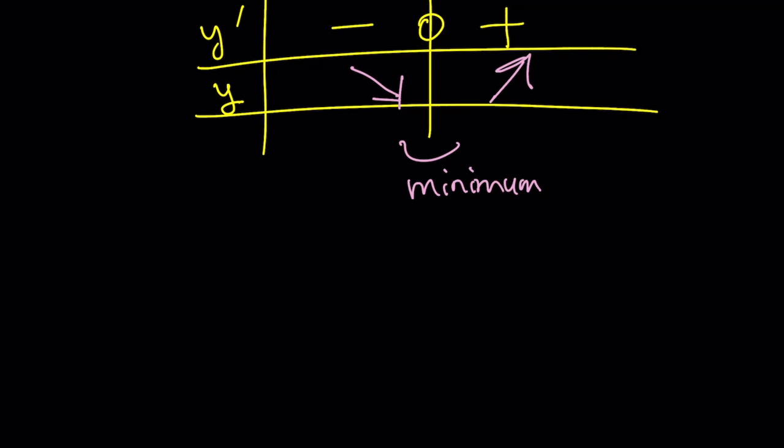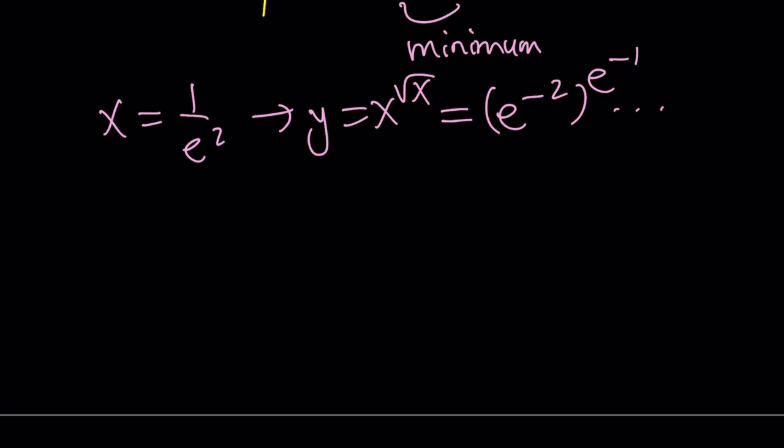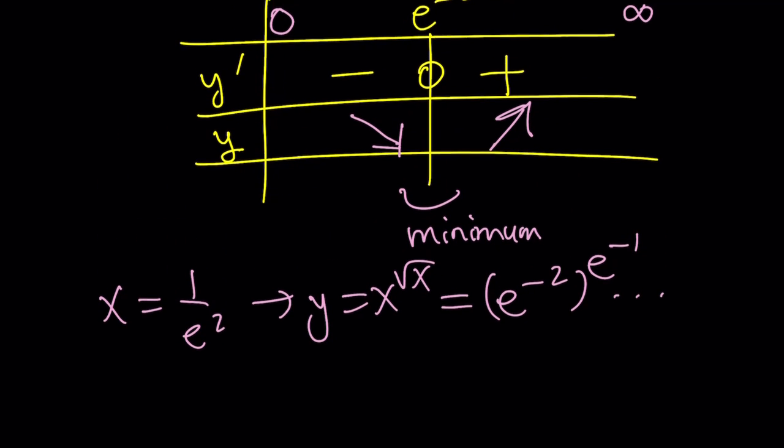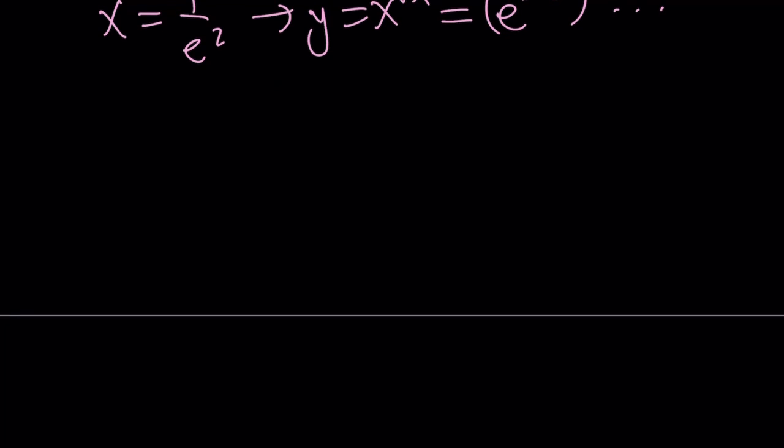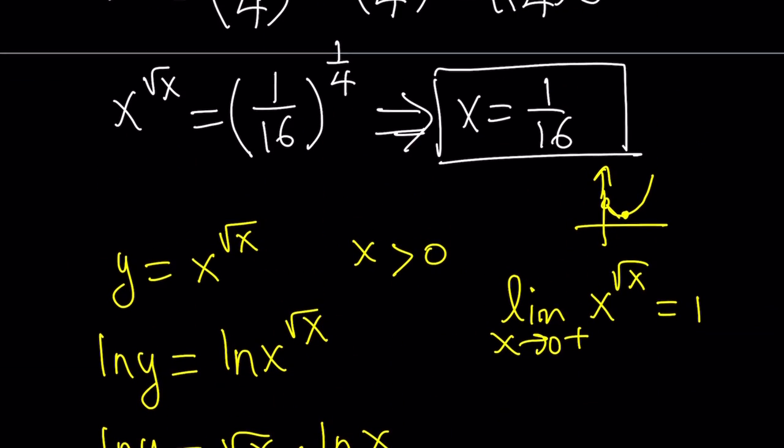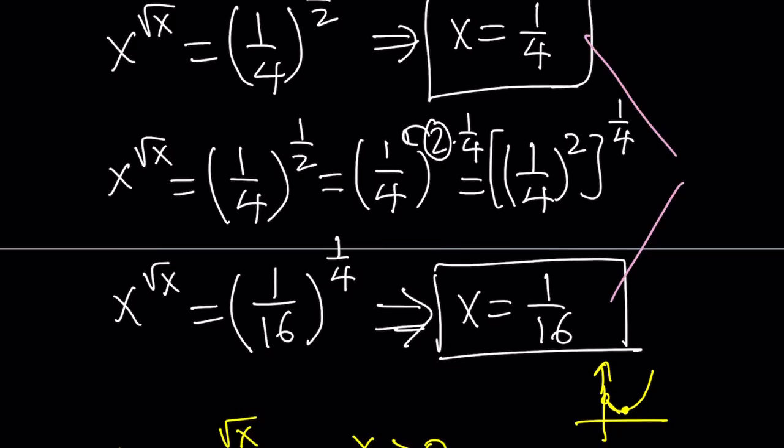If you want to know what that's going to turn into for the x value, you can plug in x equals 1 over e squared. Our function is y equals x to the power square root of x. The y value is going to be e to the power of negative 2 to the power of e to the power of negative 1. It's a positive value. We found two solutions to this equation: 1 fourth is a solution and 1 sixteenth is another solution. I want you to notice that 1 over e squared is actually between these values. Why? Because e squared is between 4 and 16. You can square 2.7 and you'll notice it's 7 something. That means between the two roots, we have our minimum point.